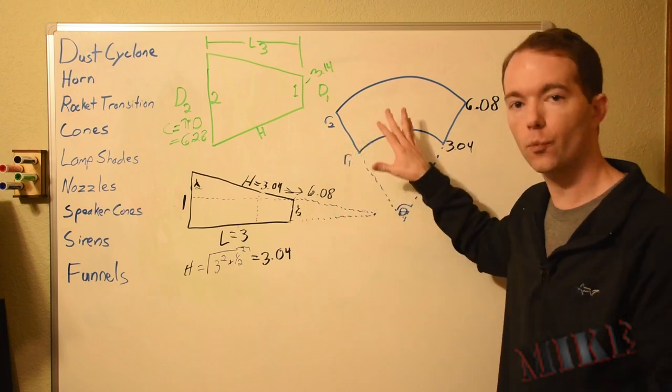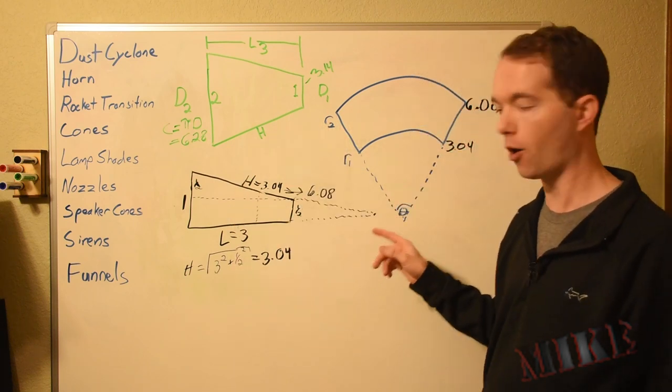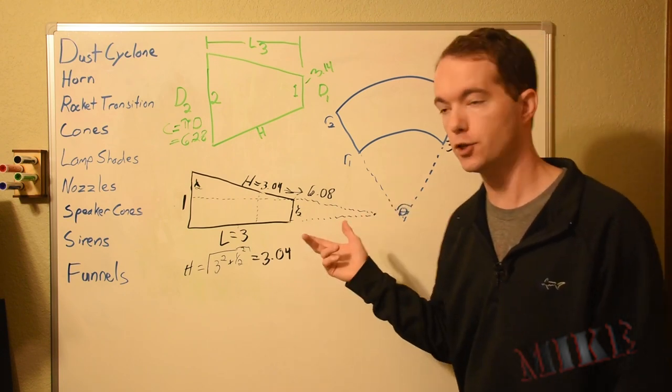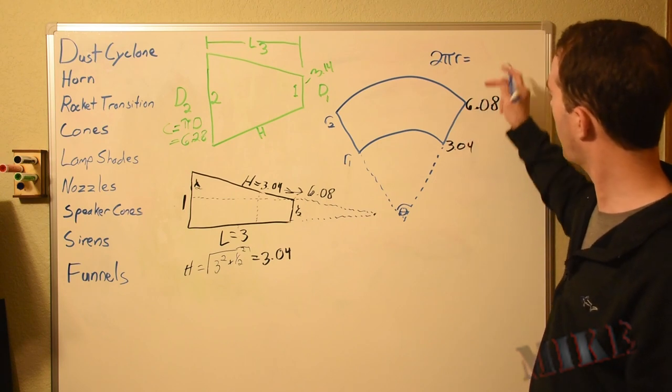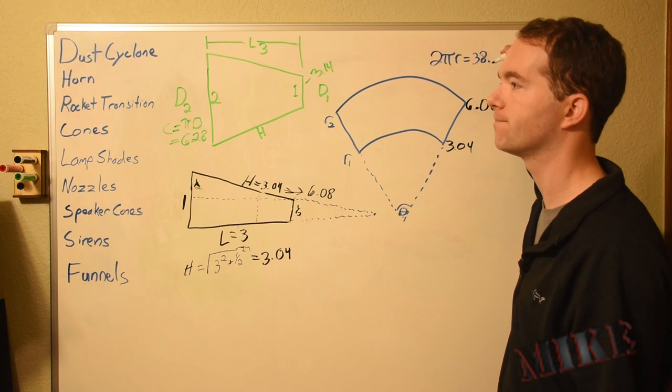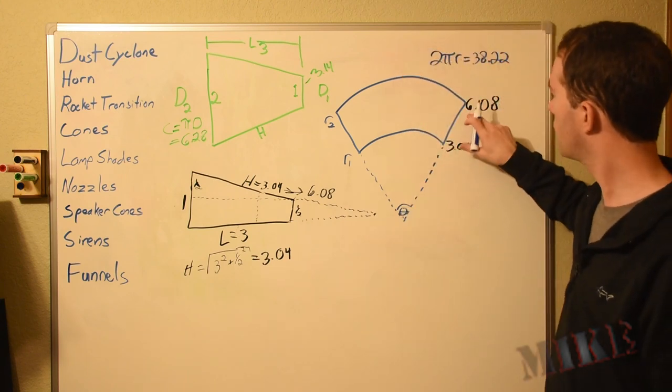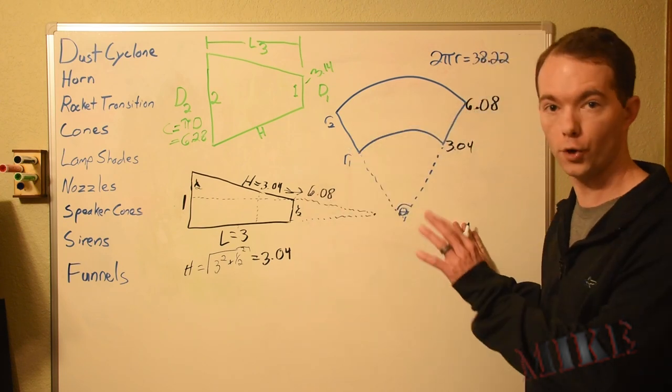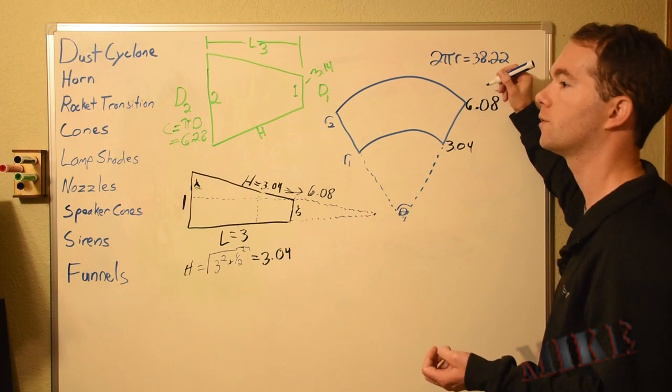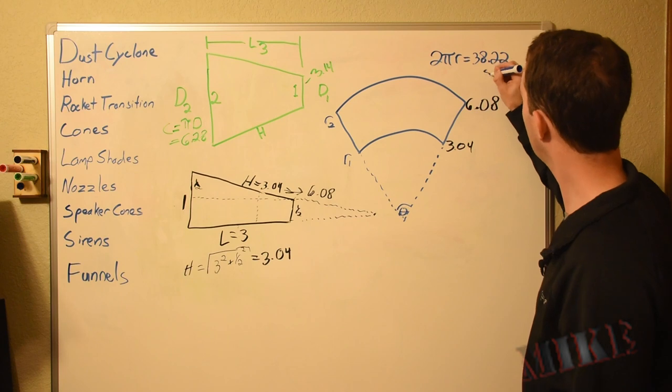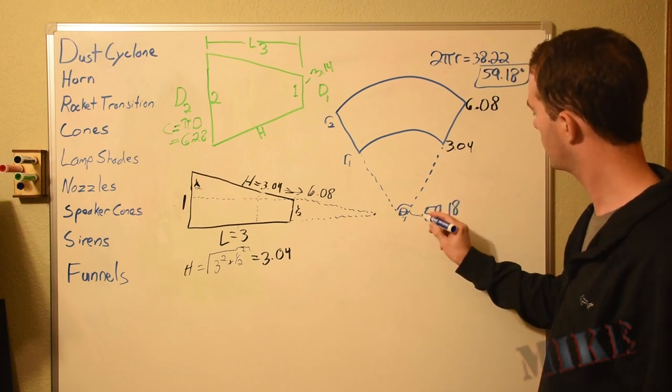So how does this 6.28 correspond to this over here? If this weren't going to wrap, and this was a full circle all the way around, what would its circumference be? It's 2 pi R. We know our R of 6.08. We would multiply that by 2, get 12.16 times pi. That would give us all the way around, which is 38.22. So what percentage of 38.22 is 6.08? We'll take 6.08 divided by 38.22: 59.18 degrees is our theta.